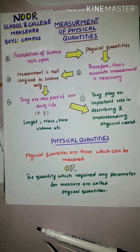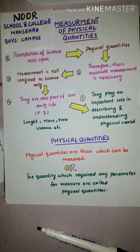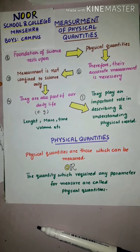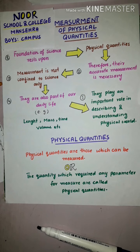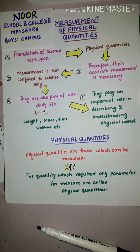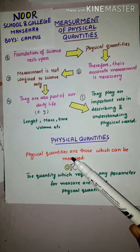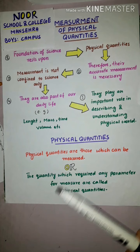In this lecture we discuss about physical quantities. What are physical quantities? A physical quantity is that quantity which you can measure. Those quantities which you can measure are called physical quantities.